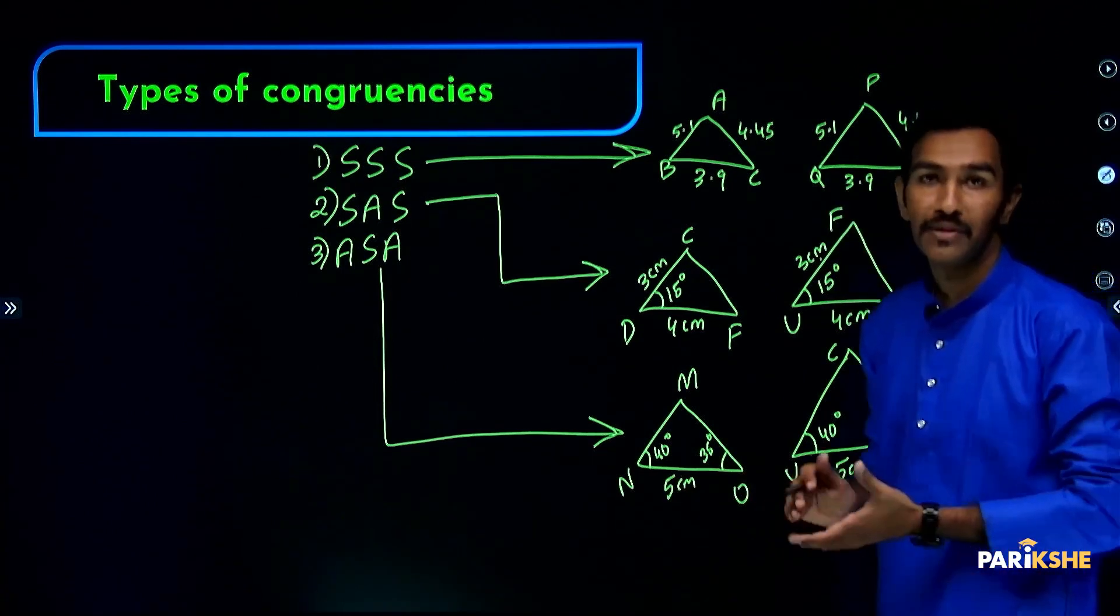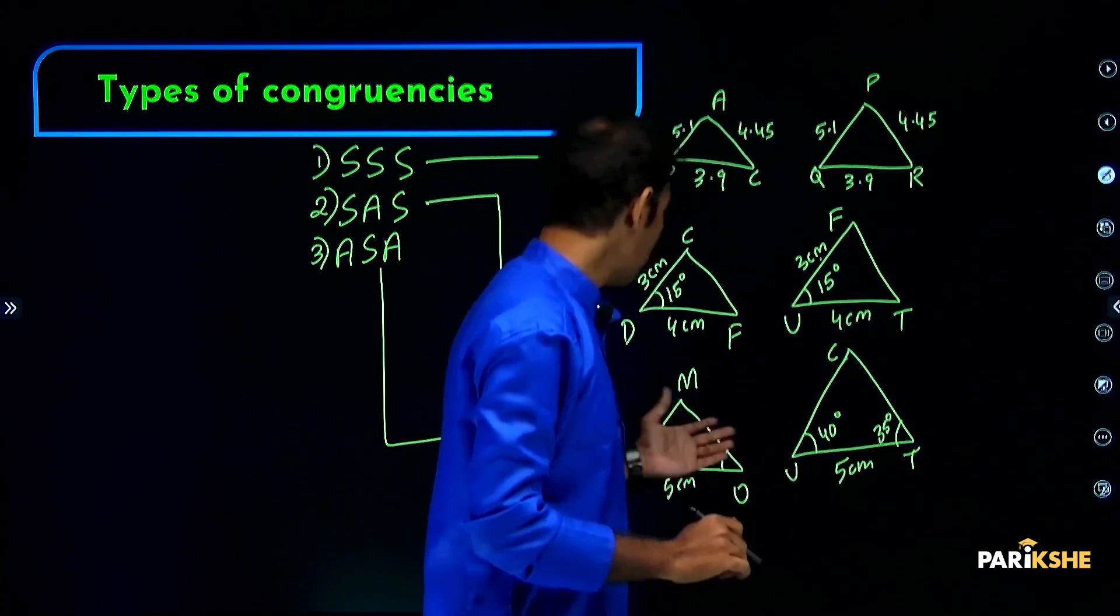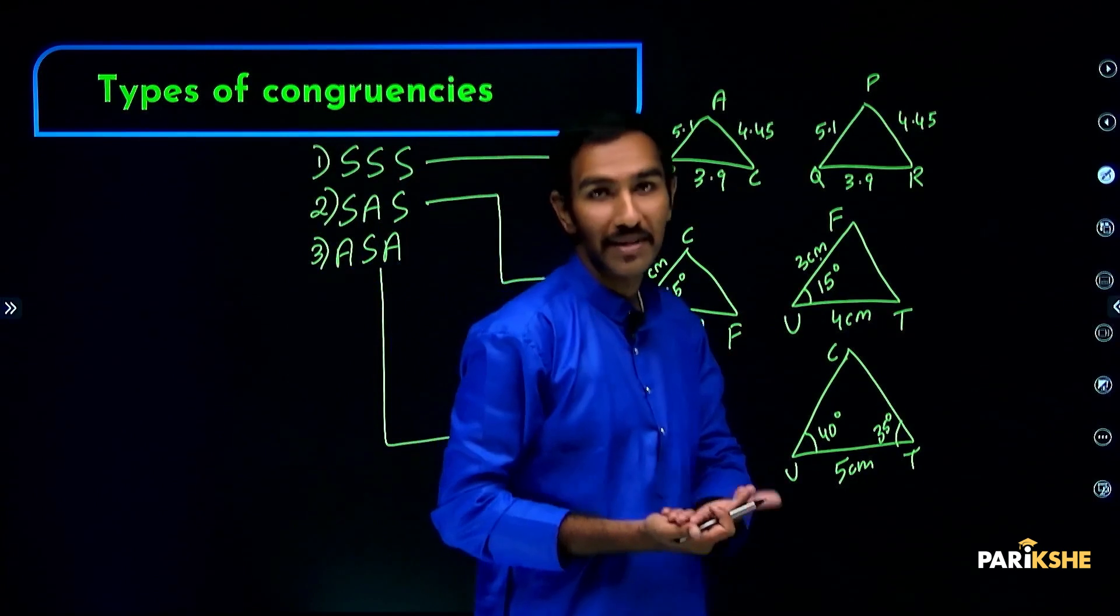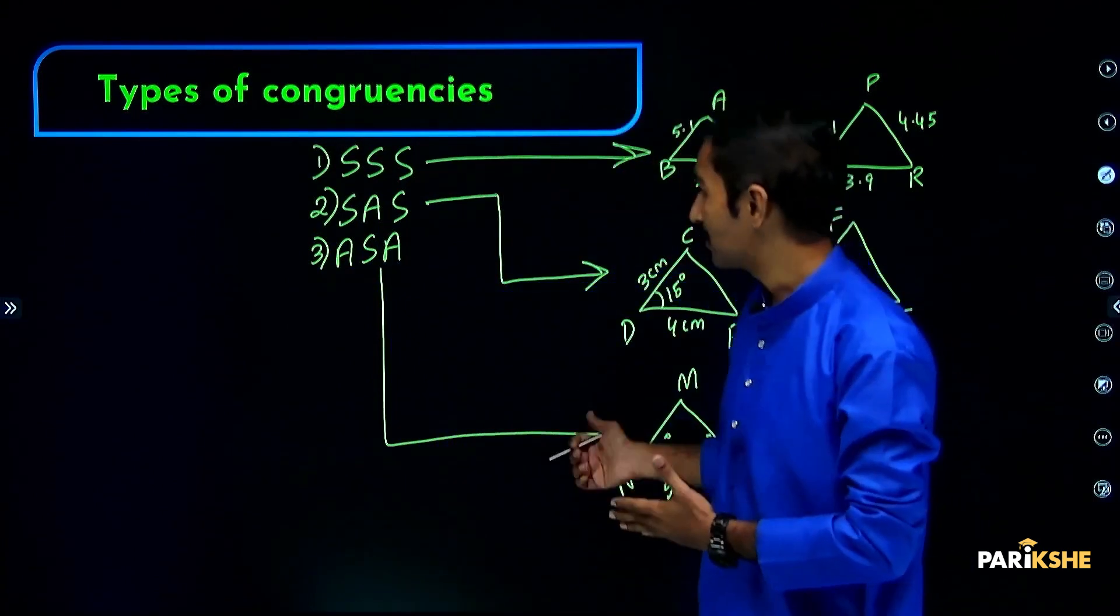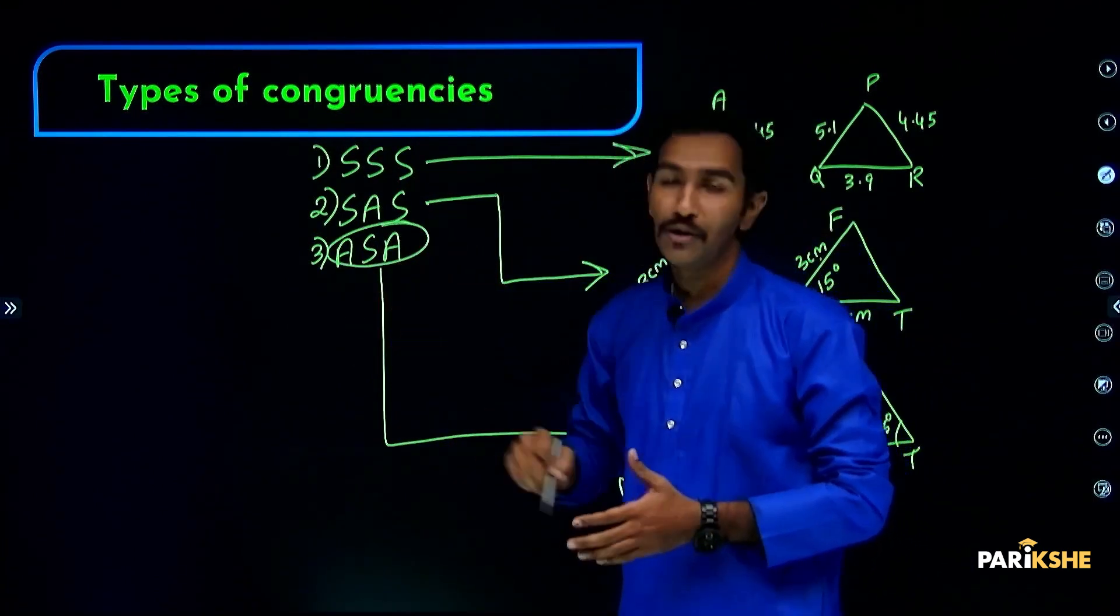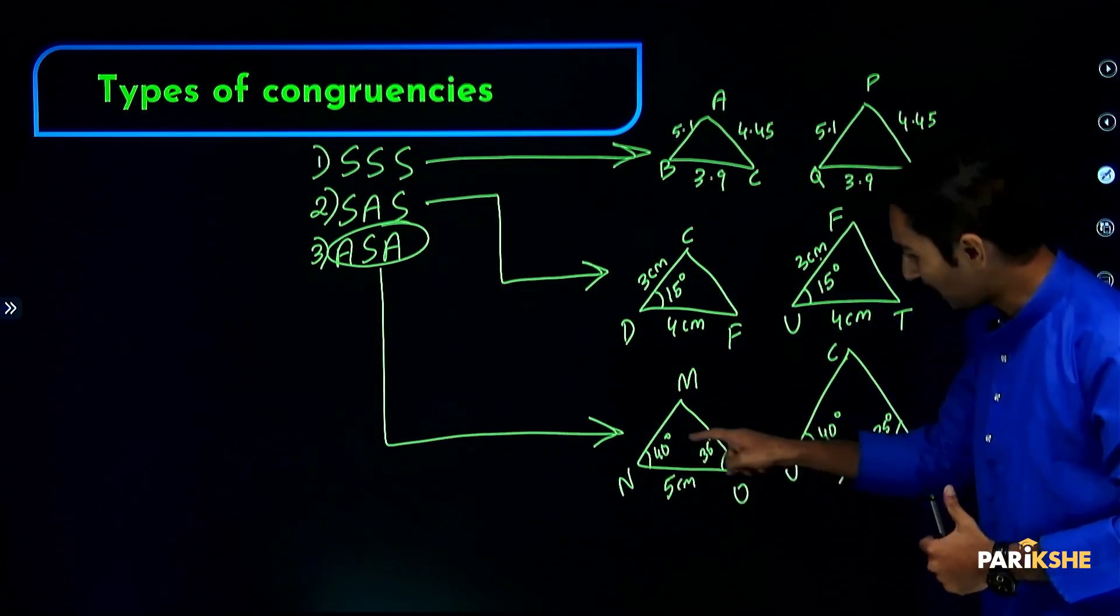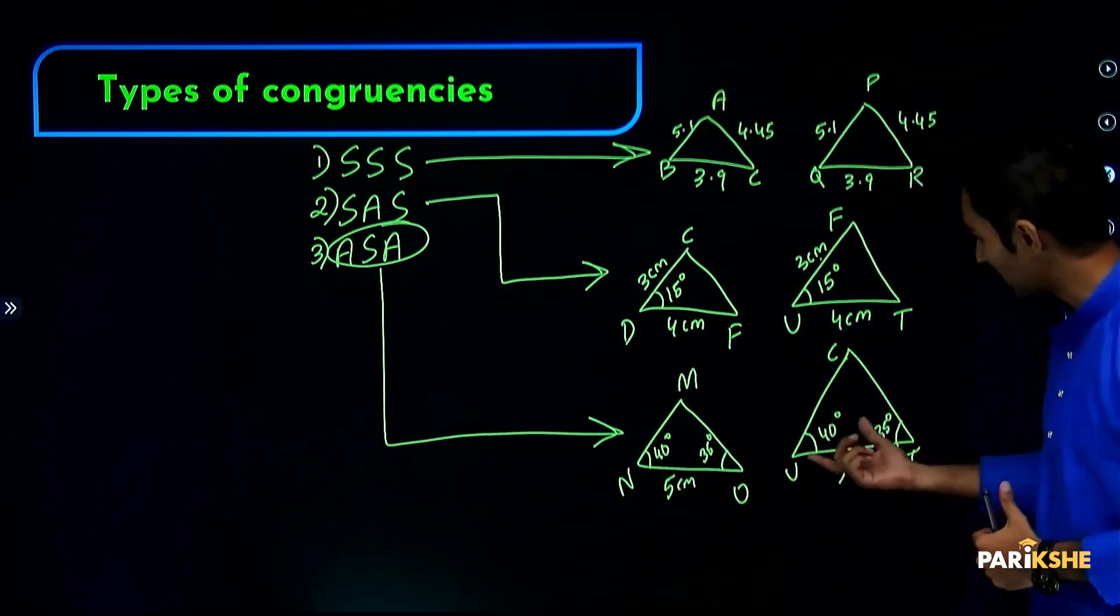That is what we call triangle MNO is congruent to triangle CUT. We are telling this on the basis of ASA congruency. When there are two triangles with corresponding angles the same in both triangles...